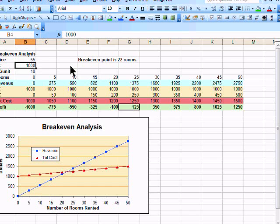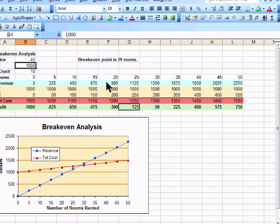If we want to change the price to 55, we would see that our revenue is going to cross over at a different point. And instead of 25, we only have to rent out 22 rooms. If we drop that down to 45, we can see that the break-even point is actually higher. It's now 29 rooms.